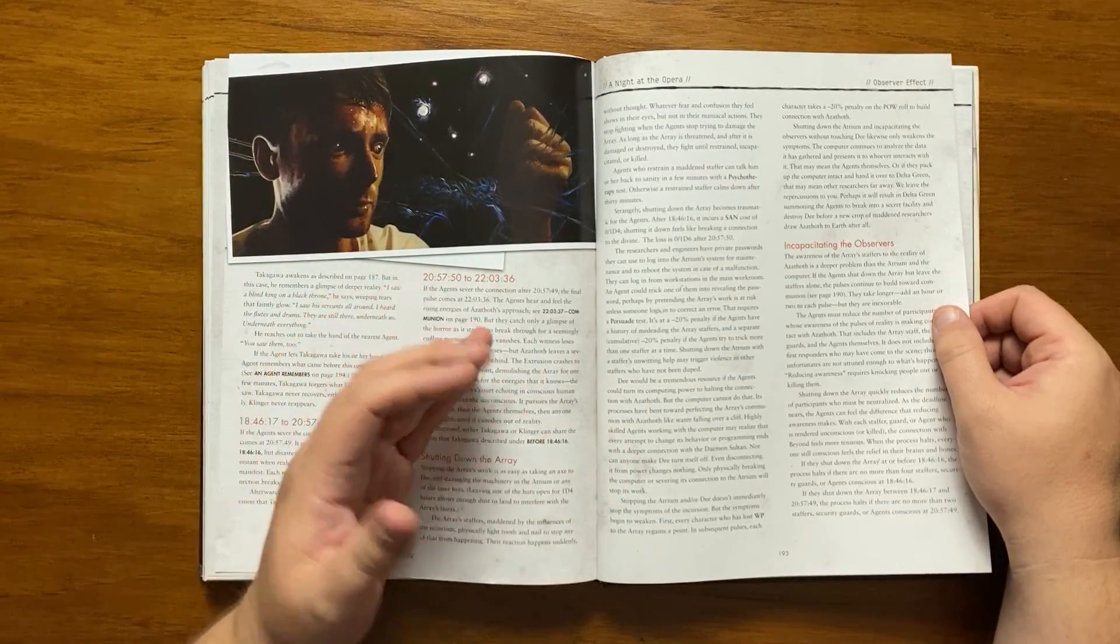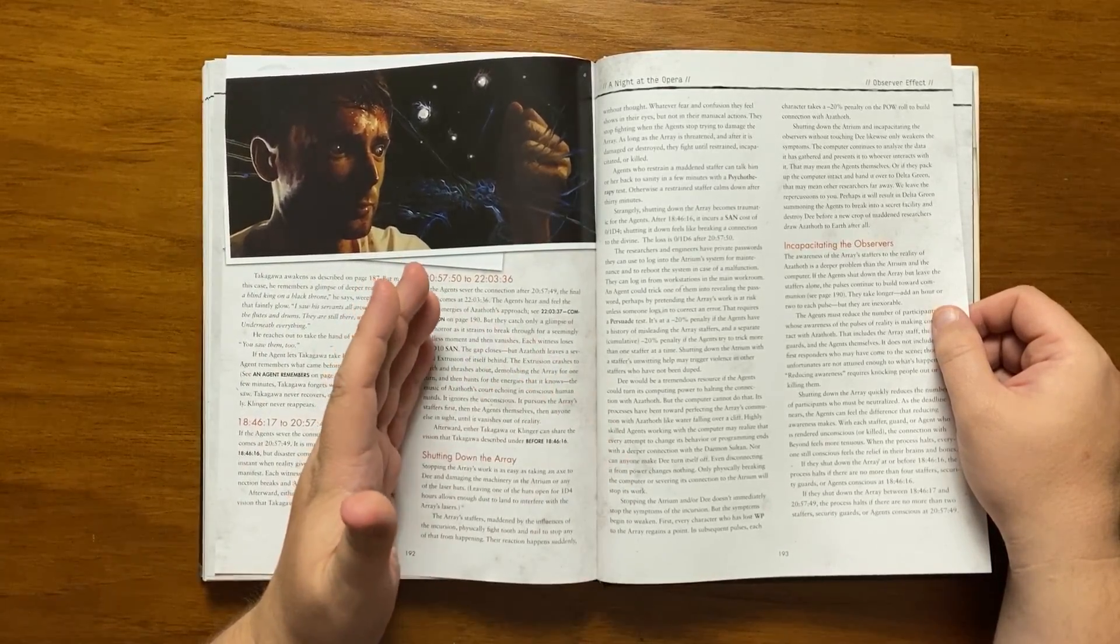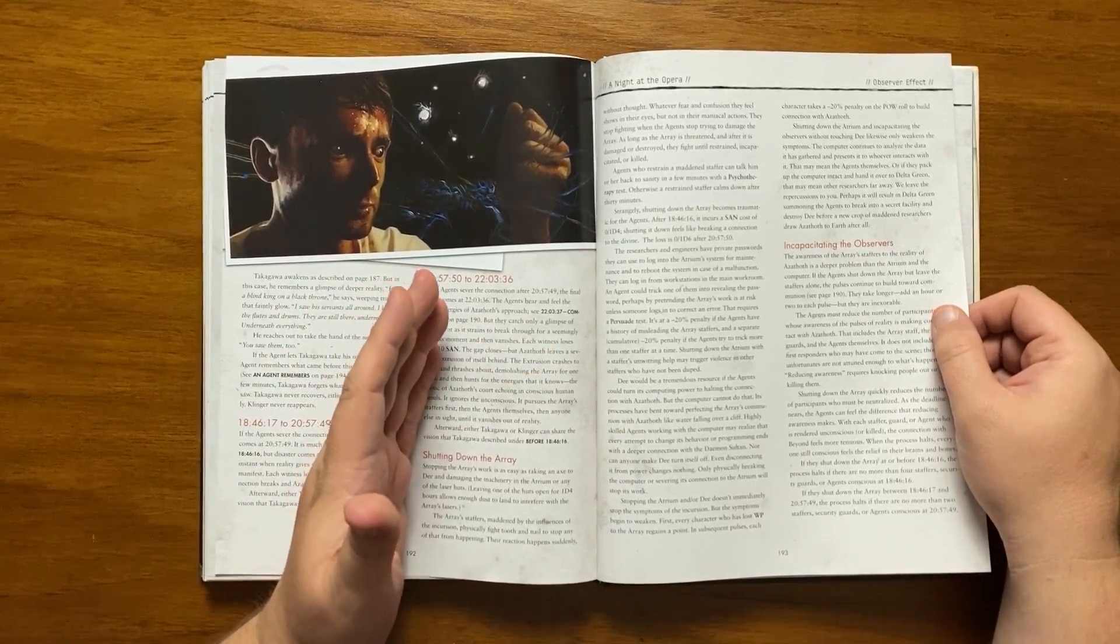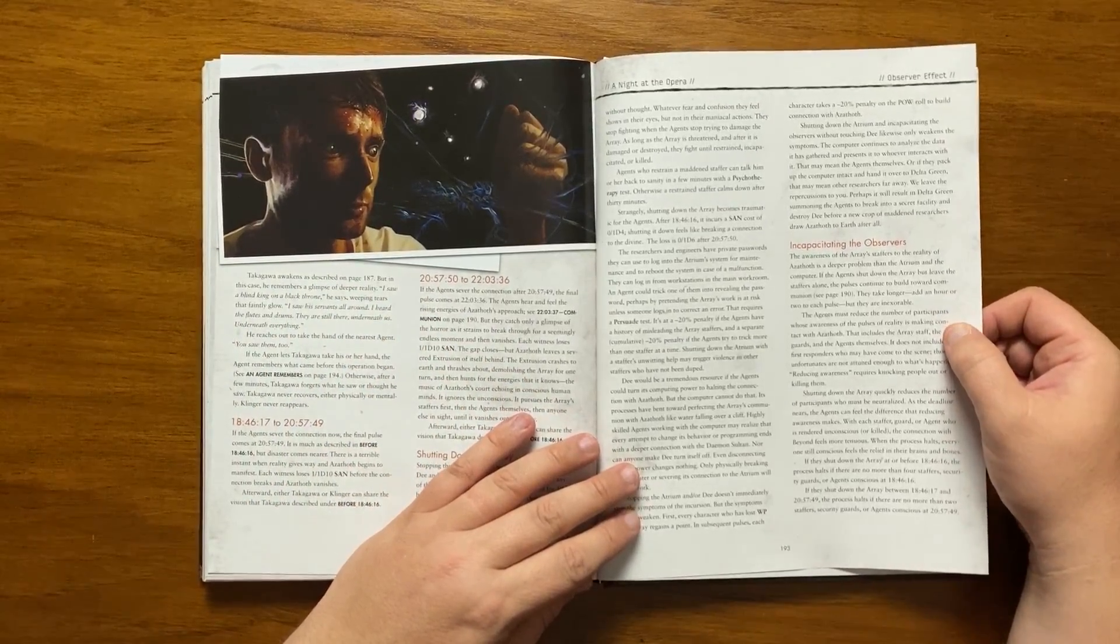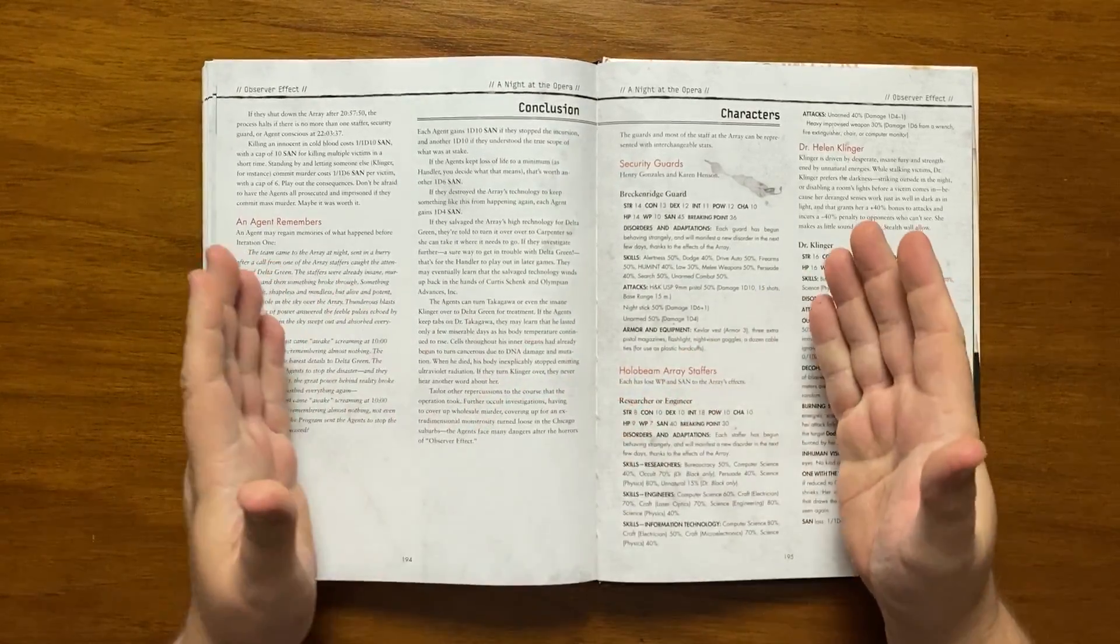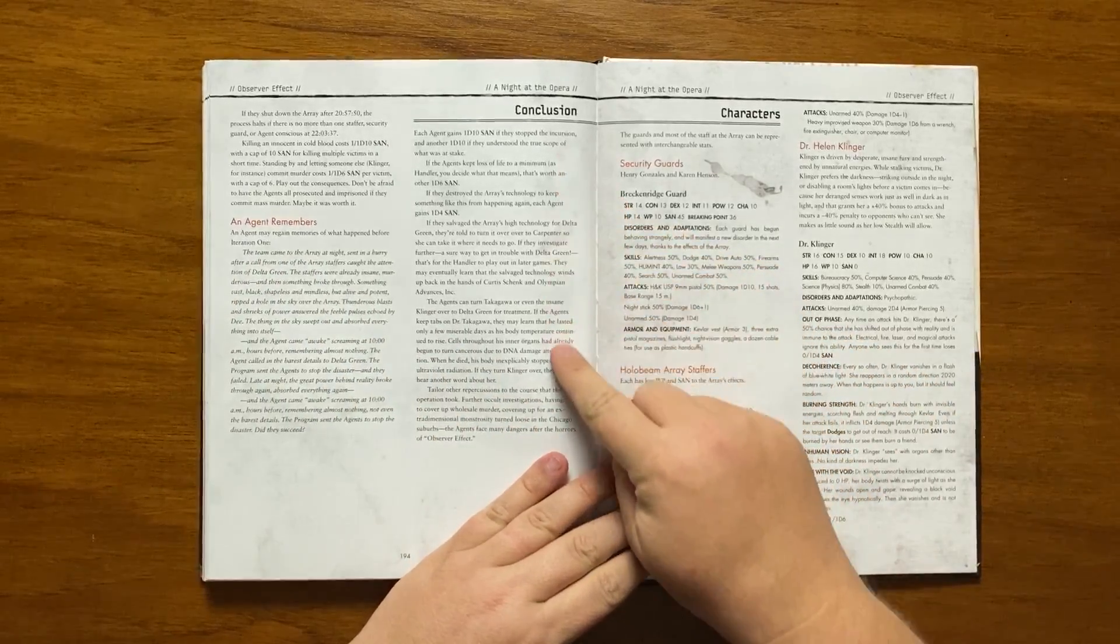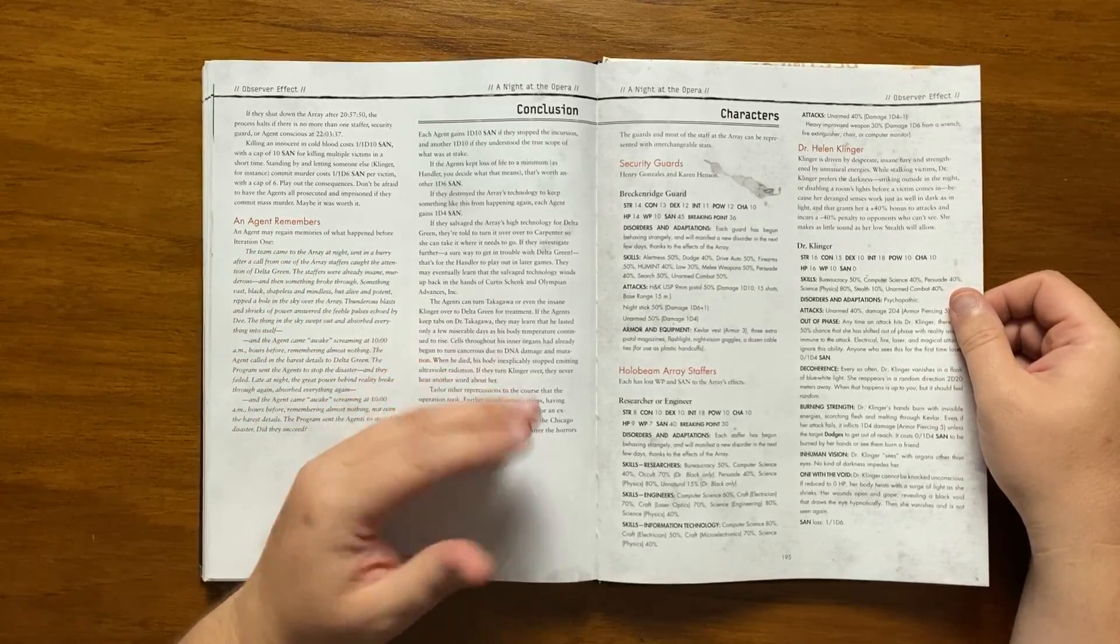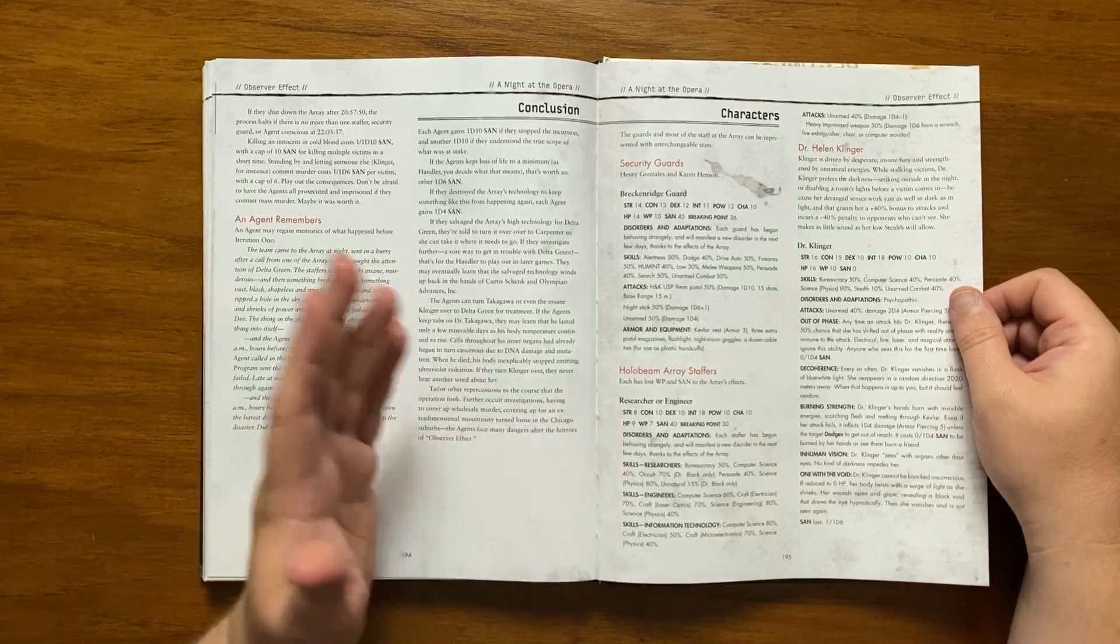Should the agents shut down the array but leave the staff untouched, the pulses continue to build towards communion, however they do take longer. The amount of participants with awareness of other thoughts needs to be reduced, this includes the agents themselves. This reducing of awareness ranges from knocking people out to killing them. It gives some numbers as to the amount of people out of action and each iteration time period and the effects thereof. Killing someone in cold blood has a sand hit and they can and will be prosecuted and imprisoned if they murder someone. It gives some sand gains for the things that they managed to accomplish and it can even salvage the technology for Delta Green though it could end the back in the hands of Olympian Advances Inc. It also includes the option of turning Tagawa over to Delta Green for treatment if they turn over Klinger she is never heard from again.